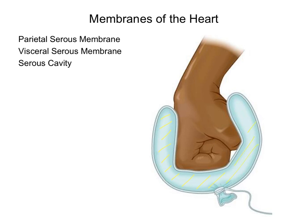A cavity is simply a space — in this case, a space between the parietal and visceral membranes. Within this space, or cavity, you'll find the fourth part of a serous membrane, called serous fluid. Serous fluid serves two functions: it is a shock absorber, and it helps reduce friction between organs.